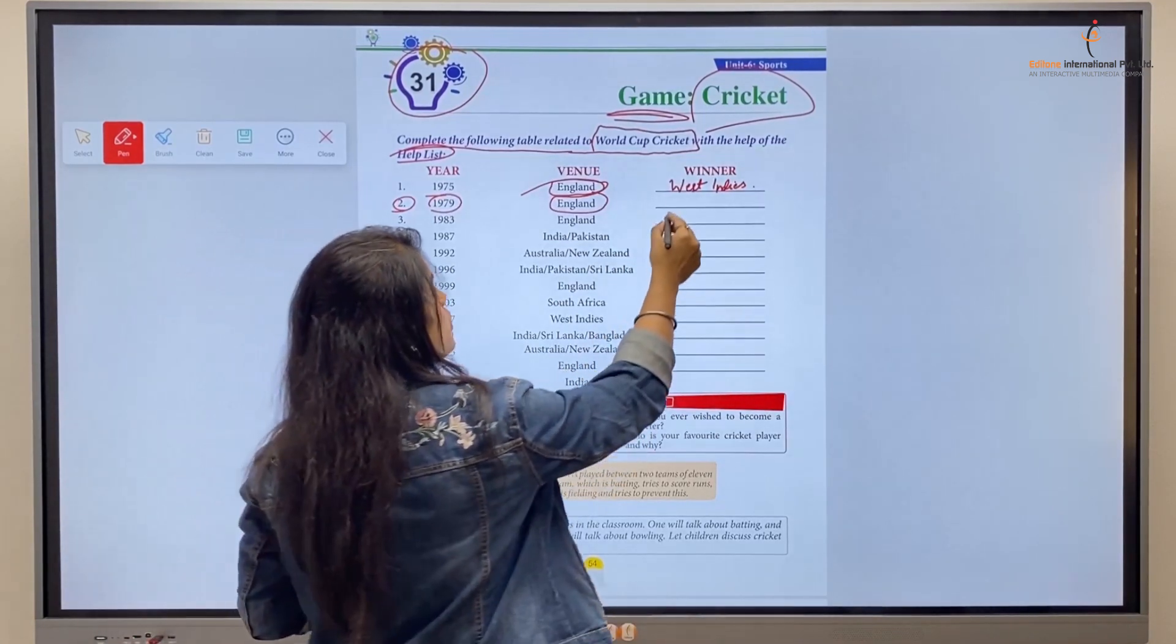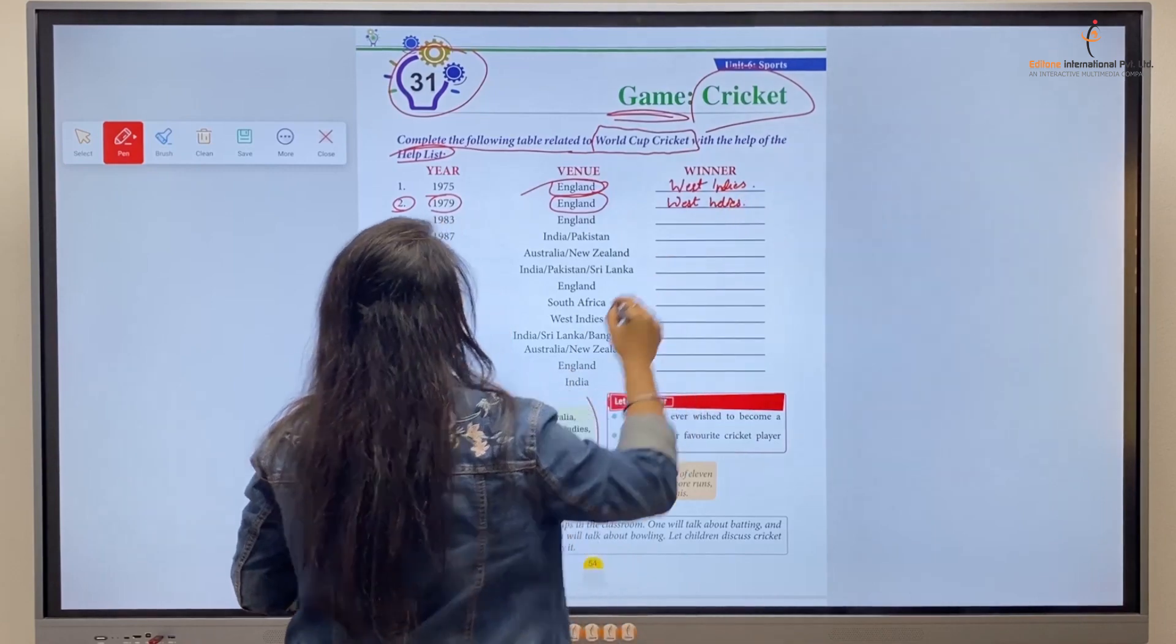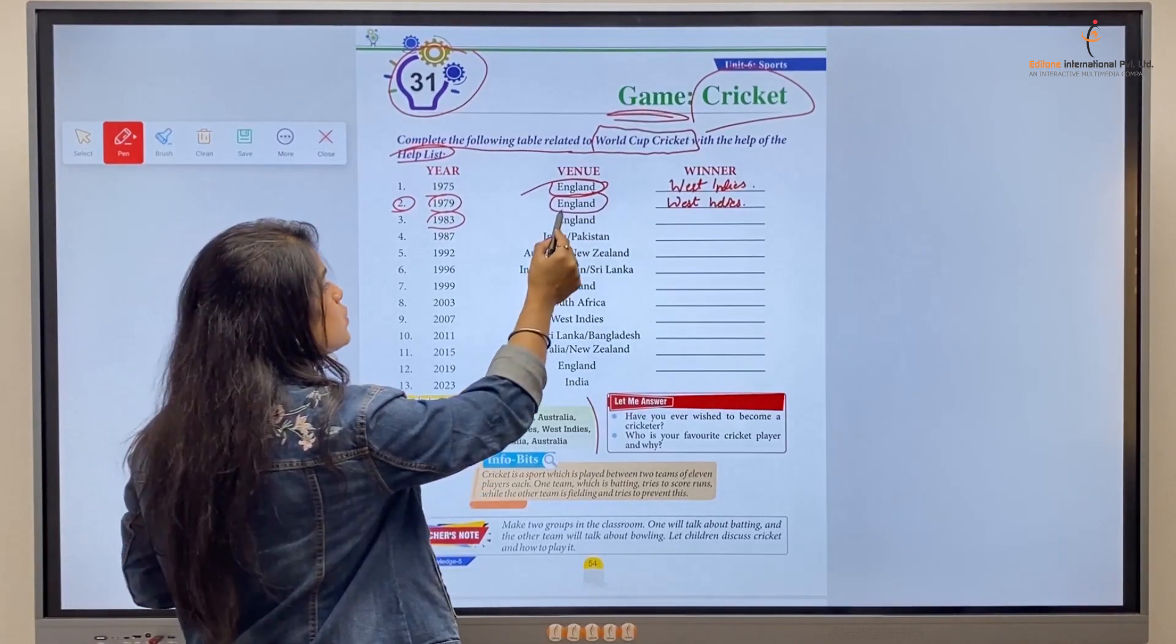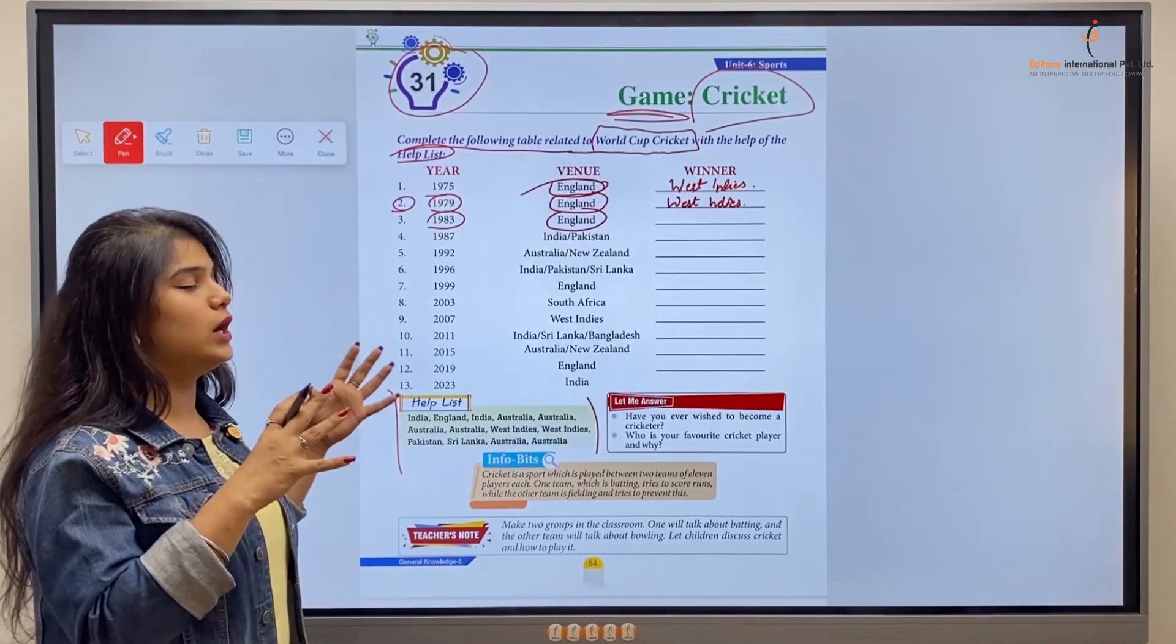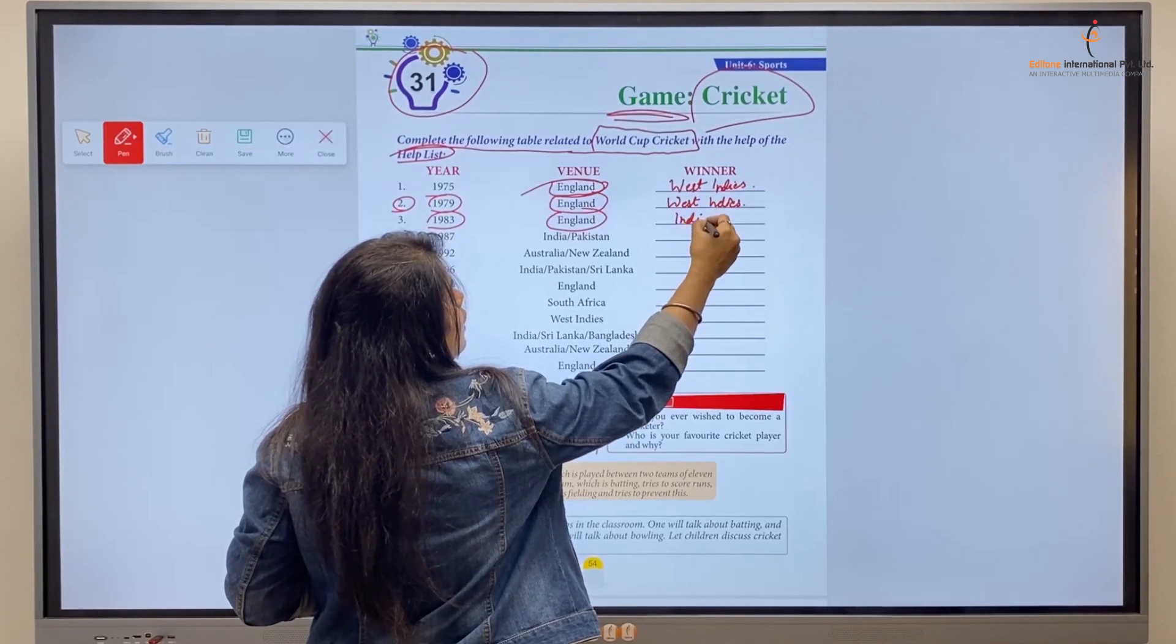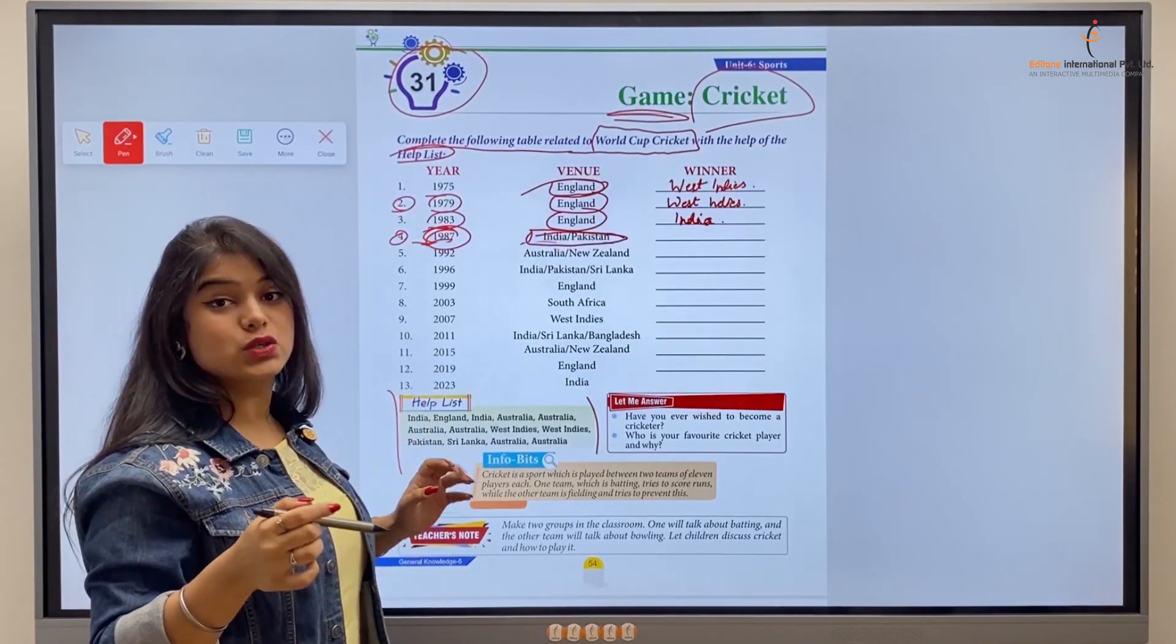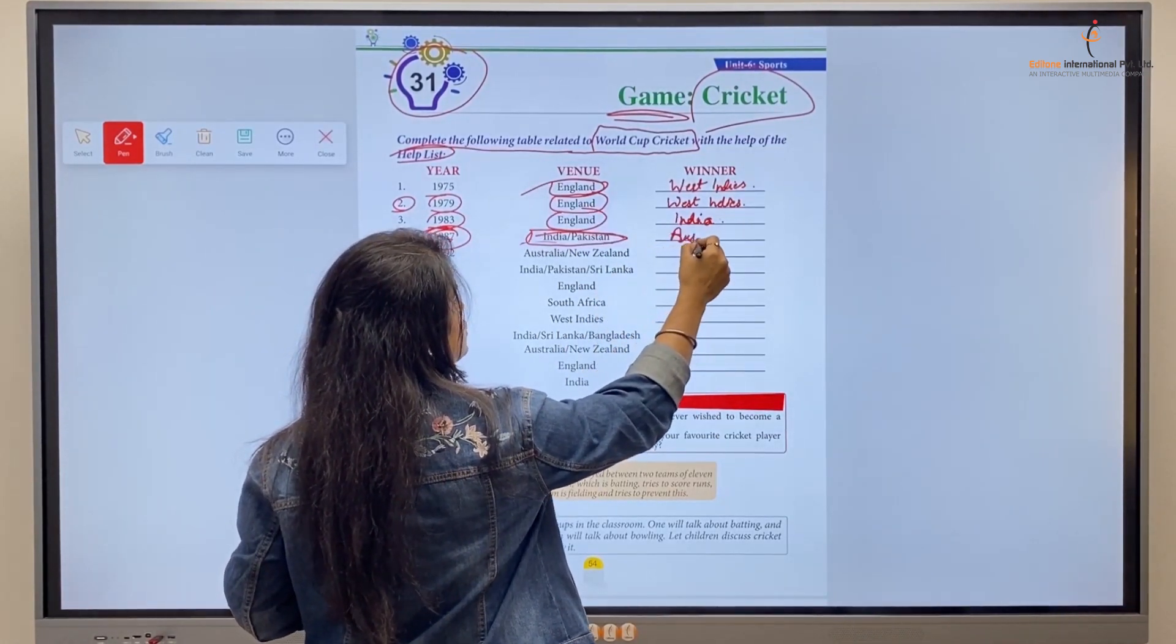Next one is number three, 1983. In 1983, the World Cup was held in England, and our Indian team was the winner of that World Cup, so we'll write India. In 1987, the World Cup was held in India and Pakistan as venues, and the winner was the team Australia, so we'll write Australia.